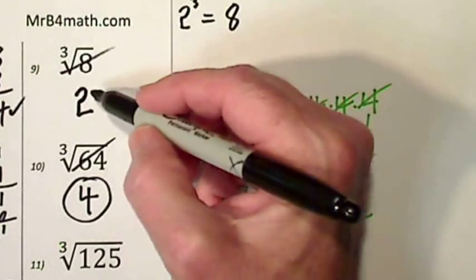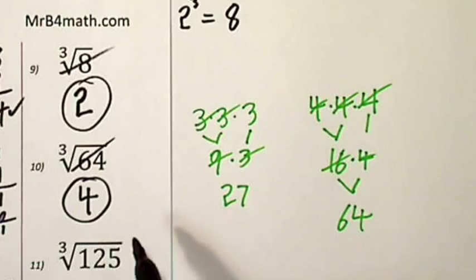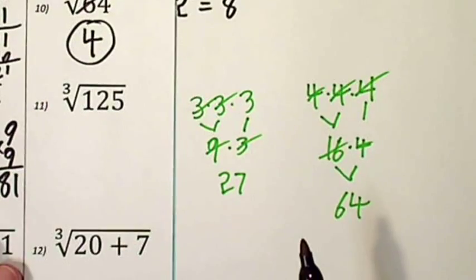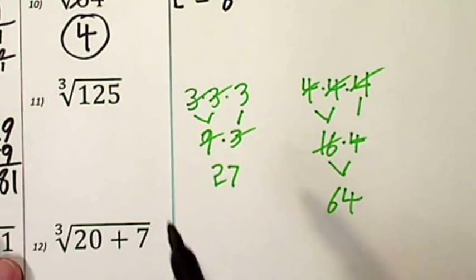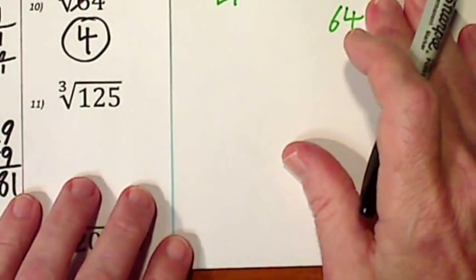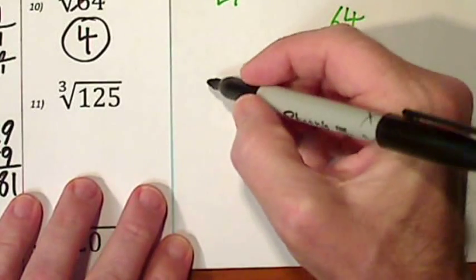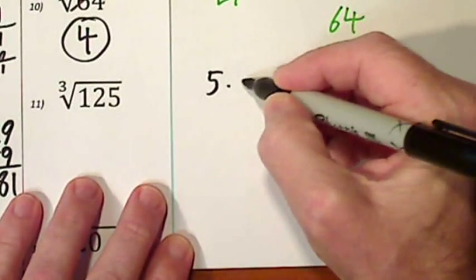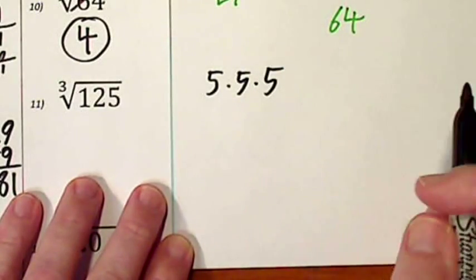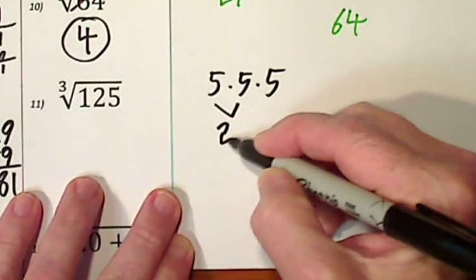Now you can see cubes get large quickly. So I'm not going to get too carried away with this. But we'll look at the cube root of 125. Well, we tried 3, we've tried 4. Let's try 5. 5 times itself 3 times. This would be 25.